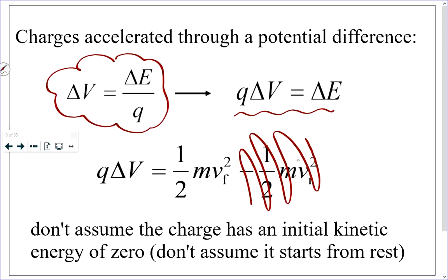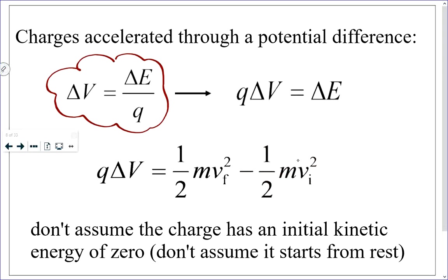On your unit exam you'll have to do a calculation using this formula where the object starts from rest, and another where it doesn't — using the full relationship: one-half mv² minus one-half mv² equals Q·ΔV.